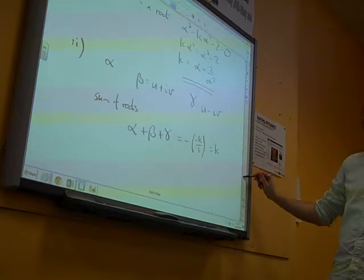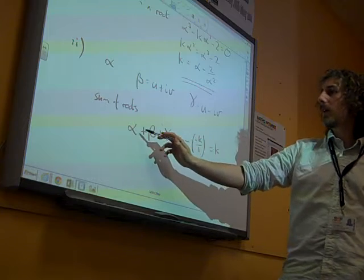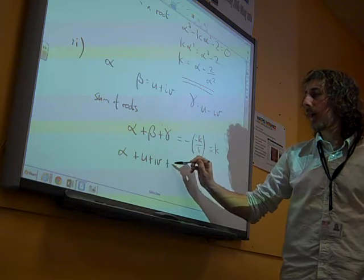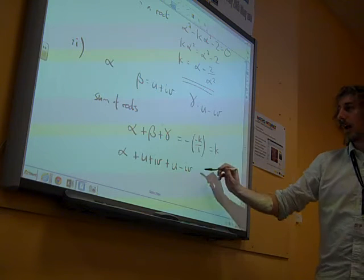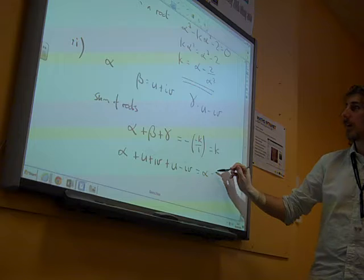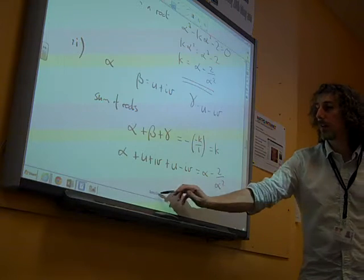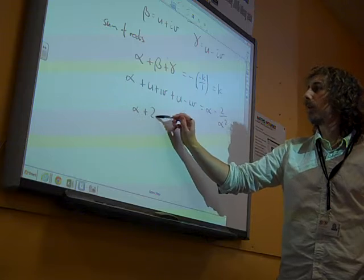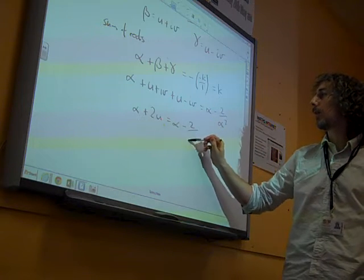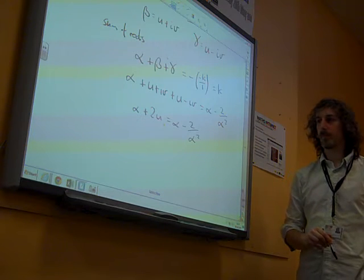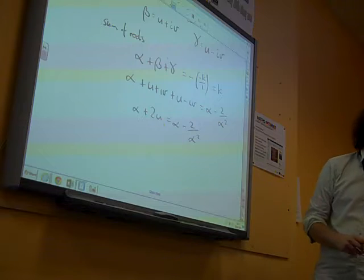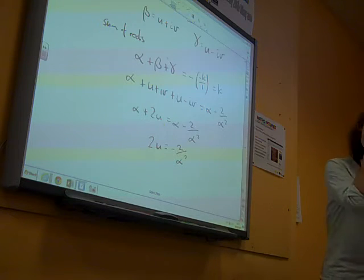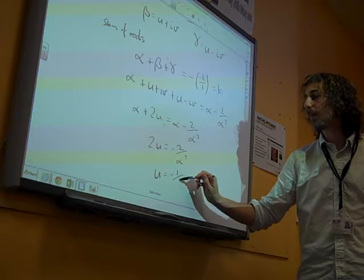Now, the question said find u in terms of alpha. There's alpha, beta is u plus iv, gamma is u minus iv, and that's equal to k. And k is alpha minus 2 over alpha squared. So we've managed to get to an equation where the v bit cancels out. We've got alpha plus 2u equals alpha minus 2 over alpha squared. If we subtract alpha from both sides, 2u is minus 2 over alpha squared. And divide by 2, u is minus 1 over alpha squared.